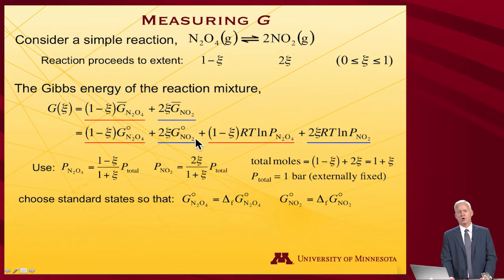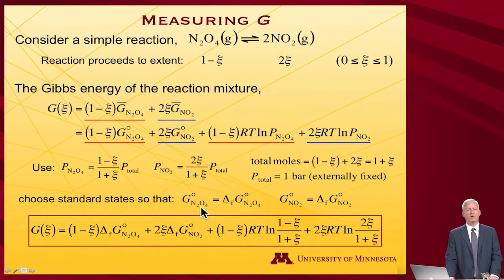And now what are those pressures? Well, I know that the total quantity in the system is 1 minus ξ of N2O4, plus 2ξ worth of NO2. So the total amount of moles in the system is 1 plus ξ. And so the partial pressures will be (1 minus ξ) over (1 plus ξ), and 2ξ over (1 plus ξ), times the total pressure. I'm going to do this one actually under a situation where I'll keep the total pressure externally fixed because I'm working with Gibbs free energy, so I'll set it to be a bar.